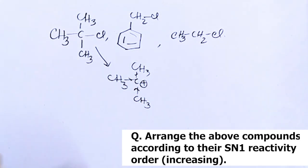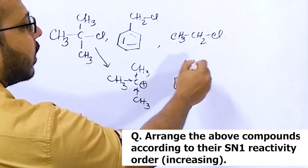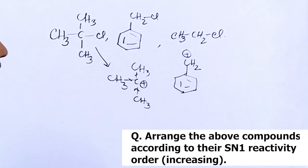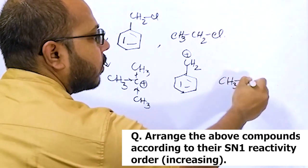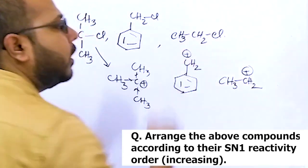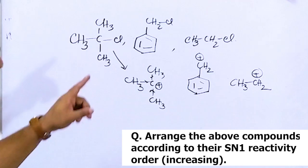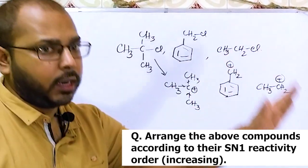In the case of benzyl chloride, after elimination of chlorine, a 1-degree carbocation is formed. And ethyl chloride also gives a 1-degree carbocation. We know that 3-degree carbocation is more stable than 2-degree, which is more stable than 1-degree.